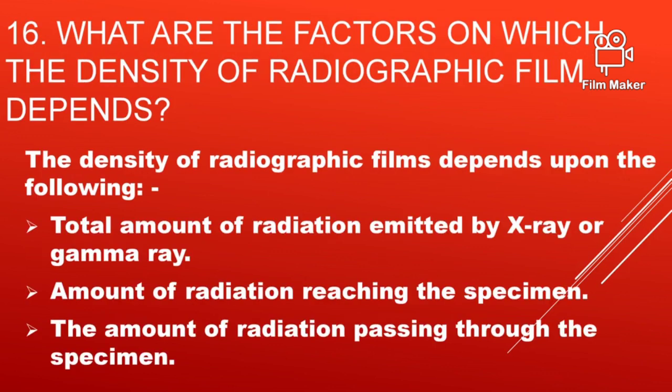What are the factors on which the density of radiographic film depends? That is: the total amount of radiation emitted by X-ray or gamma ray, the amount of radiation reaching the specimen, and the amount of radiation passing through the specimen.